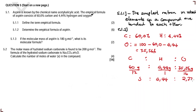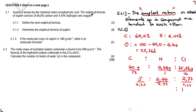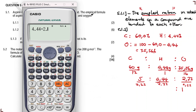Now we need the simplest ratio. We divide all values by the smallest number of moles, which is 2.22. So: 2.22 ÷ 2.22 = 1, 4.44 ÷ 2.22 = 2, and 5 ÷ 2.22 gives a decimal approximately 2.25.